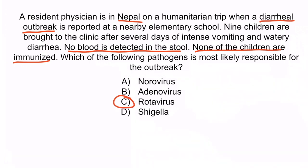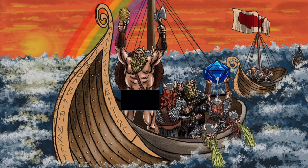Remember, rotavirus is more common in developing countries among unimmunized individuals, and norovirus is more common in developed countries among those who are immunized. So A is incorrect. Adenovirus can cause gastroenteritis, but this is a much less common cause of diarrheal outbreaks — it's more classically associated with pharyngitis, conjunctivitis, and coryza. So B is incorrect. Shigella is a bacterial cause of gastroenteritis and is much more likely to result in a bloody type of diarrhea, so D is incorrect. From the image, recall that the sail of the United States is here to help you remember that norovirus is more common in developed countries.